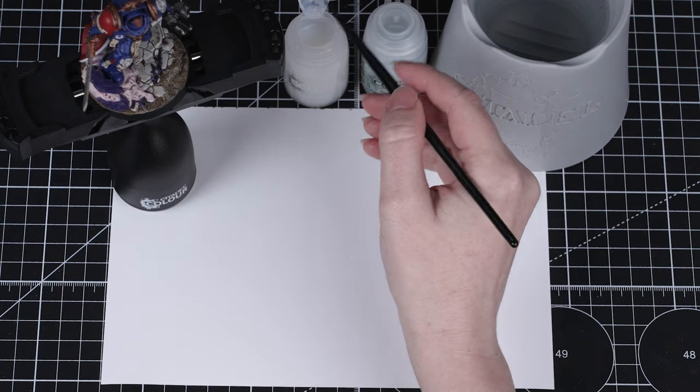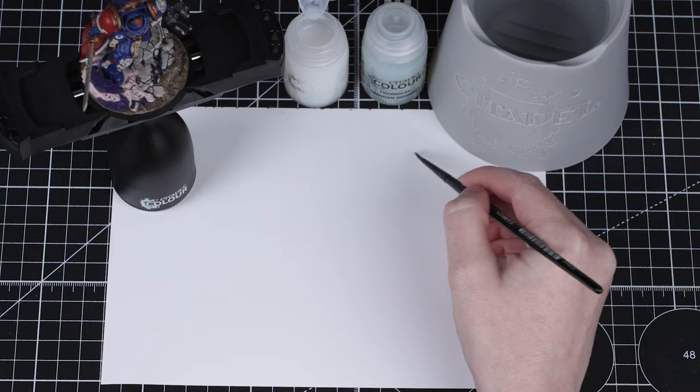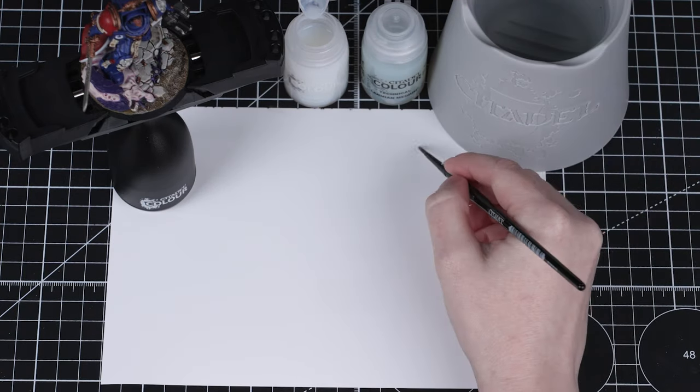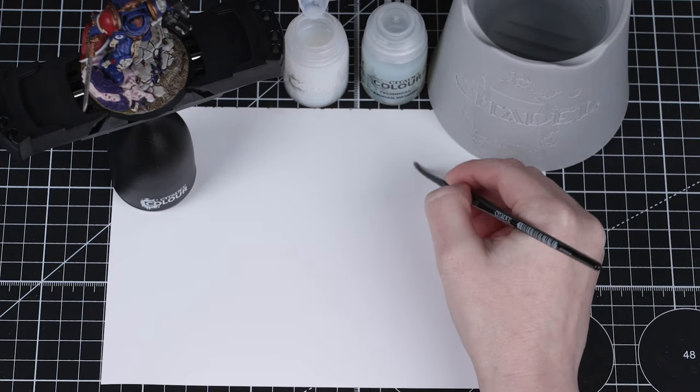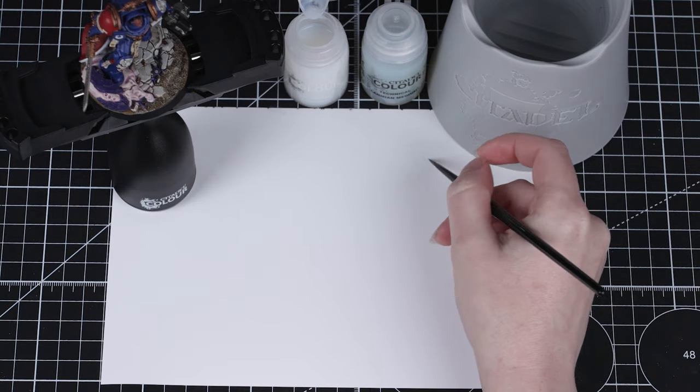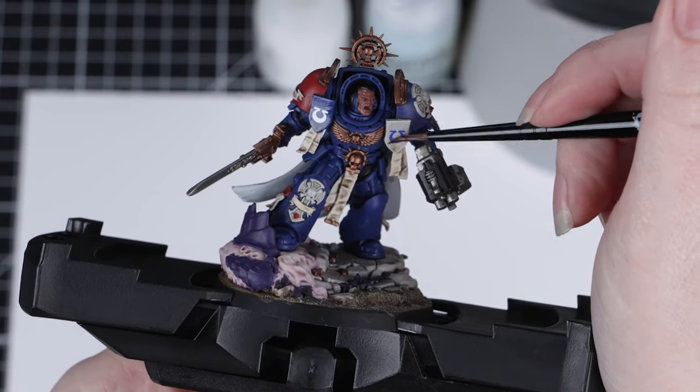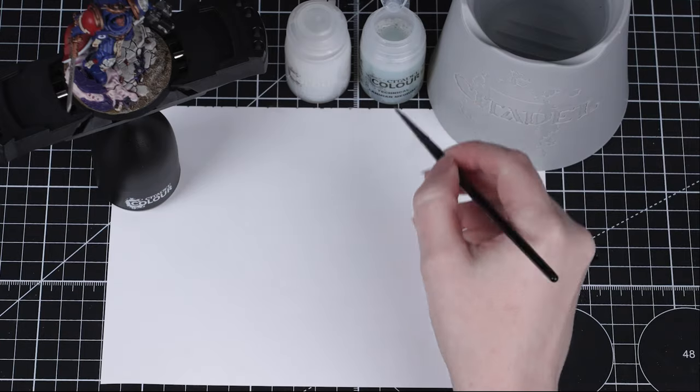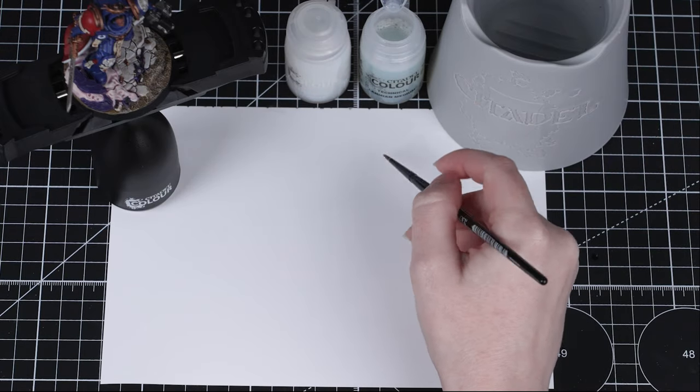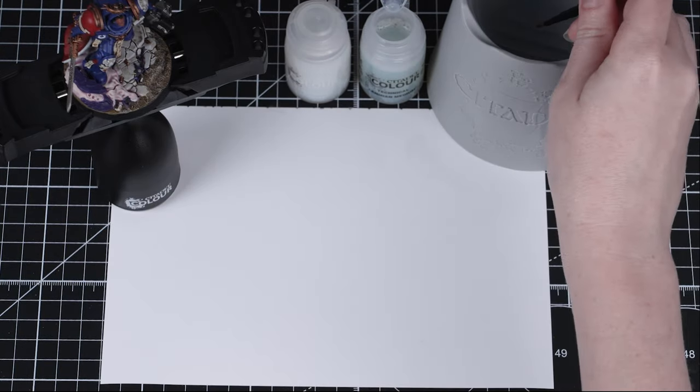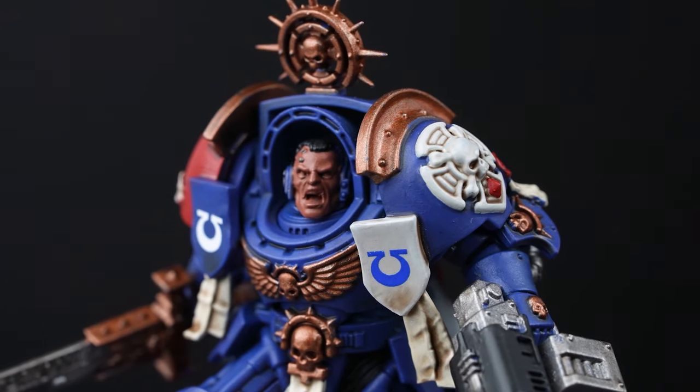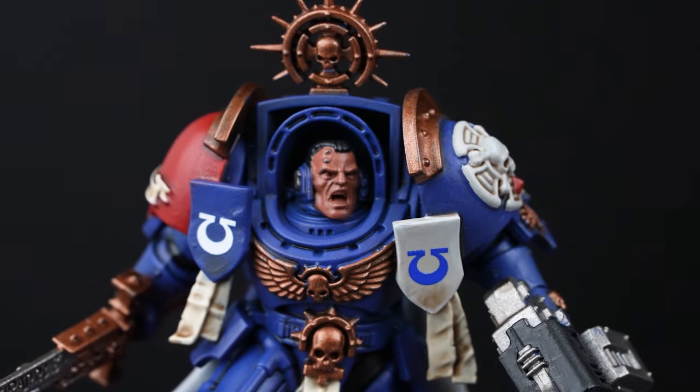Now our transfer is in position, we need to seal it in place. To do this we'll apply another layer of Ardcoat. Remember to thin it down a little bit first. Then once that's dry, we'll apply Lahmier Medium over the area. Doing this helps to get rid of that gloss finish and matte the area back down. And with that done, our transfers are complete and our miniature is looking awesome.